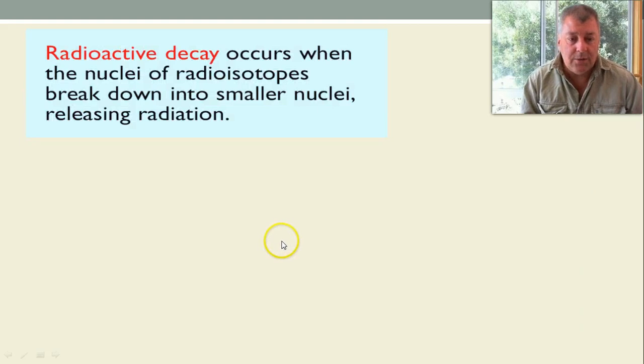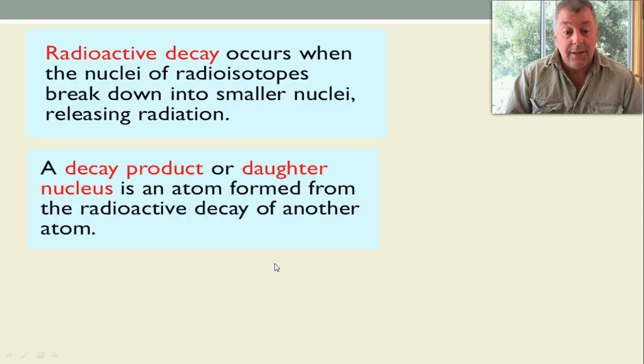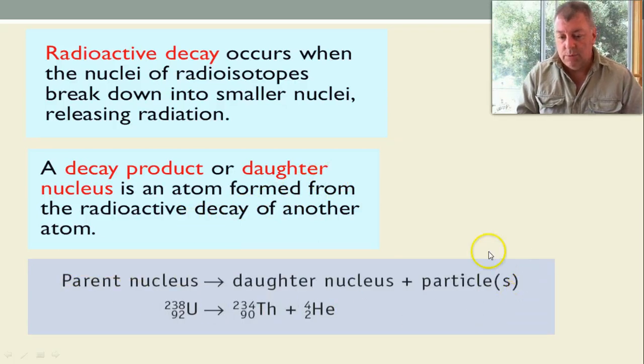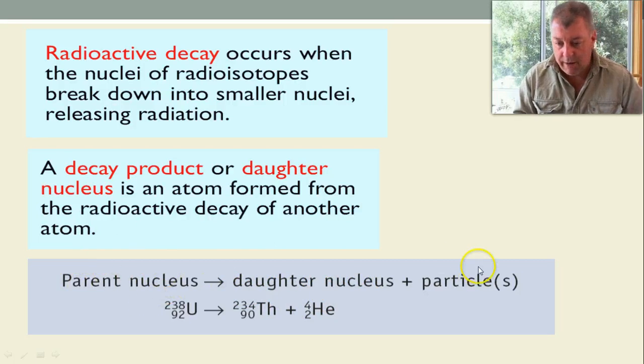A couple of things. What's radioactive decay? It's the breakdown of large nuclei into smaller nuclei, releasing radiation. Now you have a decay product. Now that decay product is sometimes called a daughter nucleus, or the daughter isotope. And this is the equation we would use, and this shows the relationship. Because we use the term daughter nucleus, or daughter product, or daughter isotope, this would be the parent. And then you have the particles.